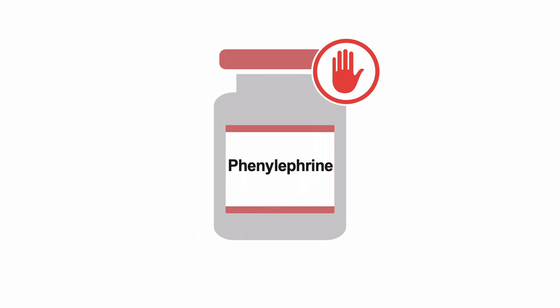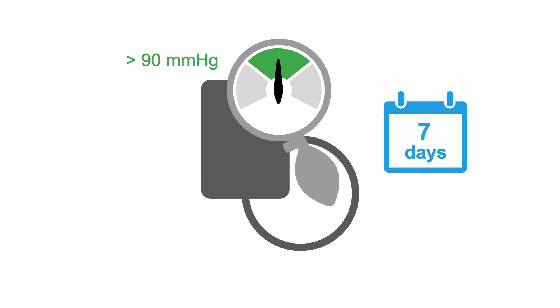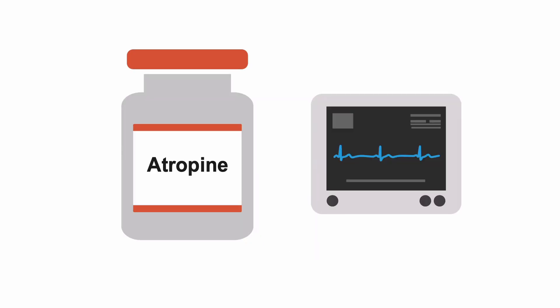Avoid phenylephrine, as it may increase vagal tone and worsen bradycardia. In patients with spinal cord injury, a mean arterial pressure of greater than 90 millimeters of mercury should be maintained for the first seven days after the injury. Atropine can be used in cases of profound bradycardia.